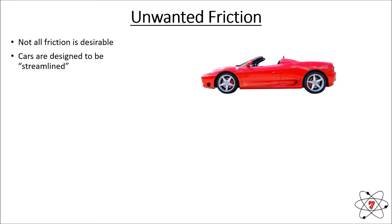Cars need friction between their brakes to slow down, but in other parts of the car we want to reduce friction. We want the body of the car to be as streamlined as possible, because as a car moves through the air there is friction between the car and the air — the more friction there is, the slower the car will be.